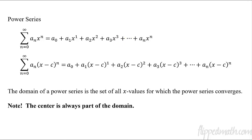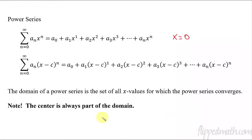Here it would be centered around x equals zero because you don't have this minus c inside with the x. So that's an important thing to be able to recognize. We want to know where the center is when we do these problems. It is helpful because the center is always going to be part of the domain. The domain is all the x values where the power series converges, meaning it will converge at least to the center, and many times more than just the center.